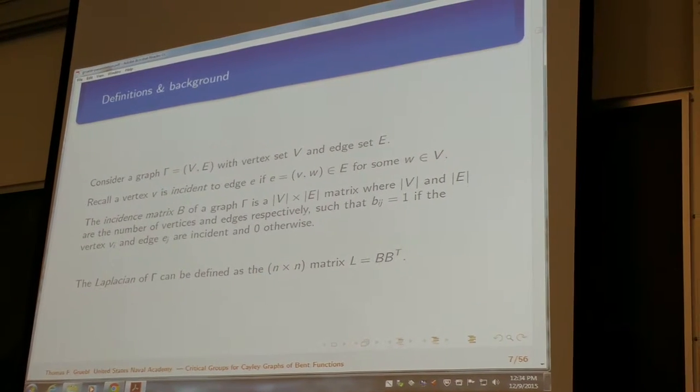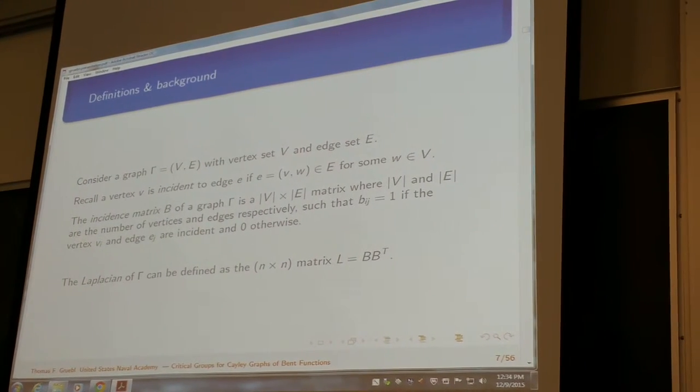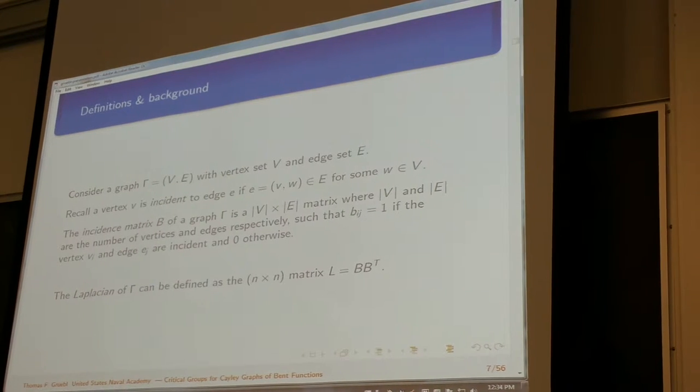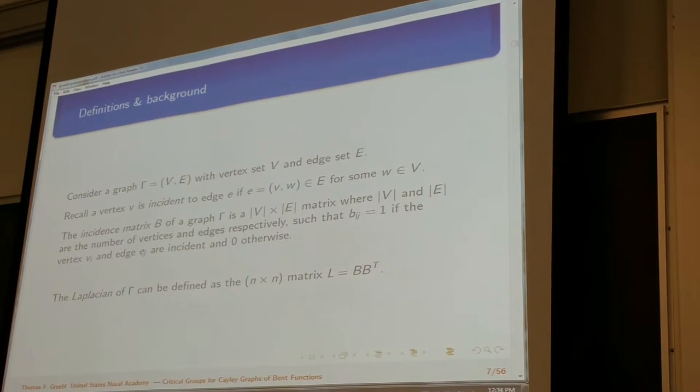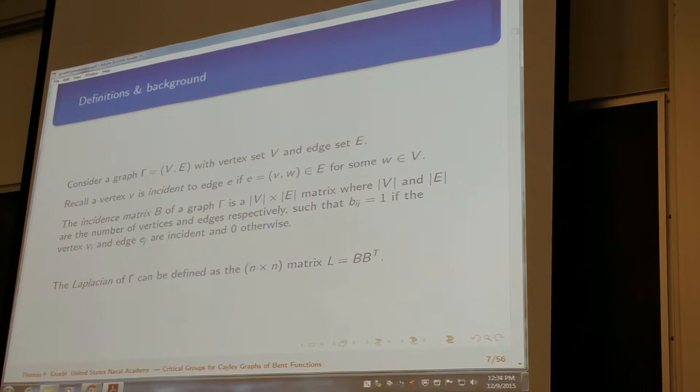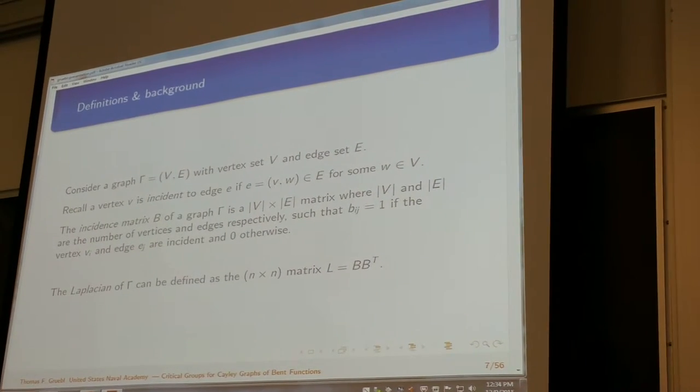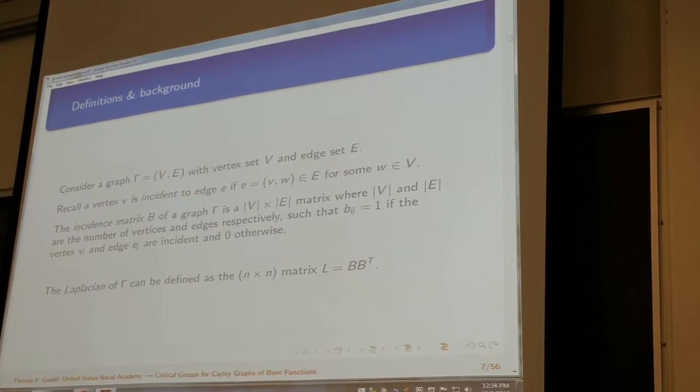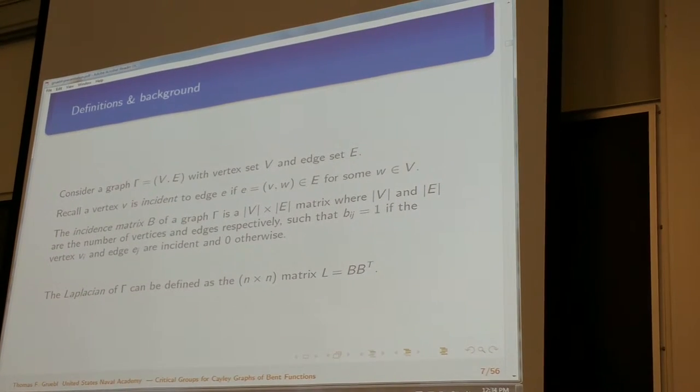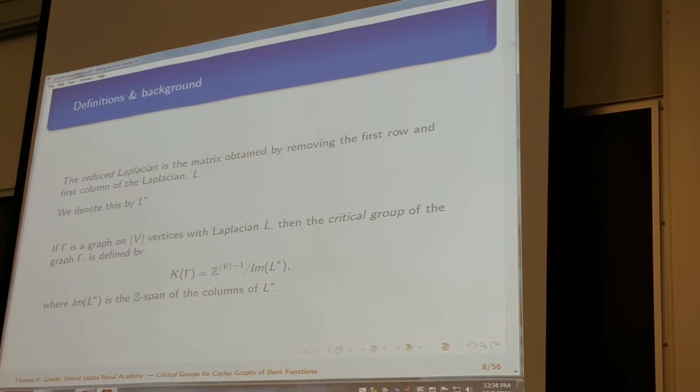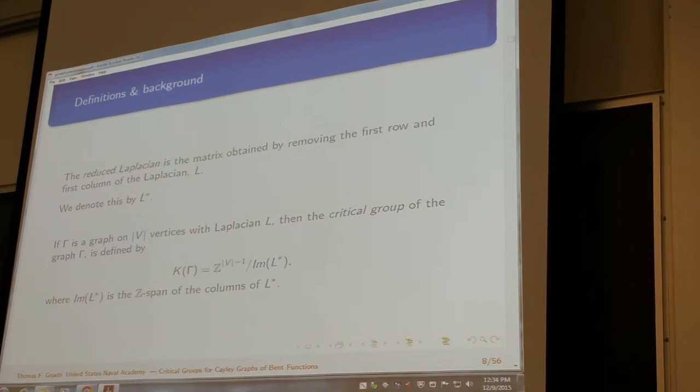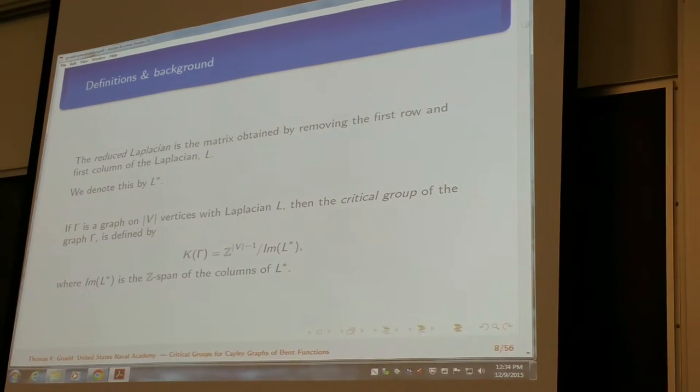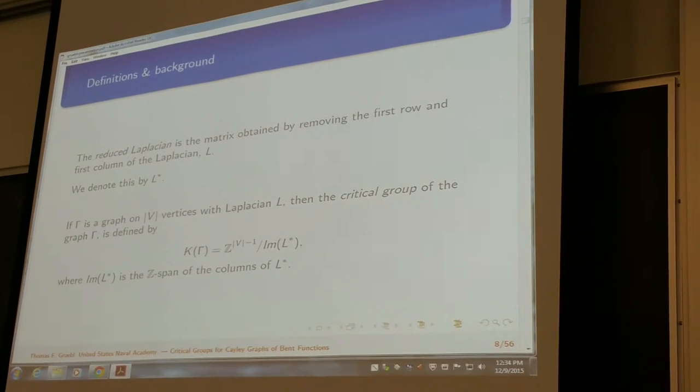Moving into a little bit more towards what I was studying, it's more just background of graph theory. We're talking about a vertex being incident to an edge as well as the incidence matrix of a graph. These are useful because for the Laplacian of the graph, the Laplacian is an n-by-n matrix such that L equals B times B transpose. This is actually the analog of the Laplacian for partial differential equations. And then really what we're concerned with is not so much the Laplacian as the reduced Laplacian, which is the matrix obtained by removing the first row and first column of the Laplacian. We denote it with L star.